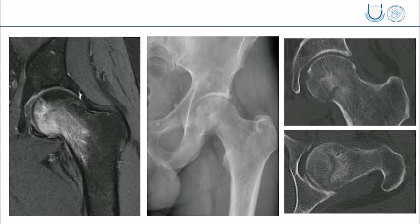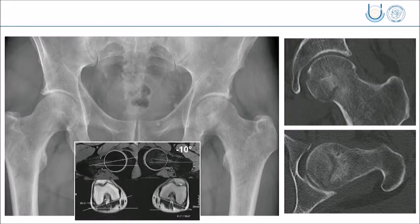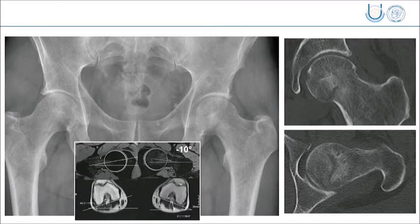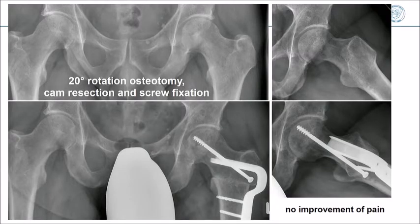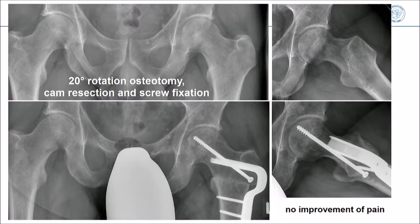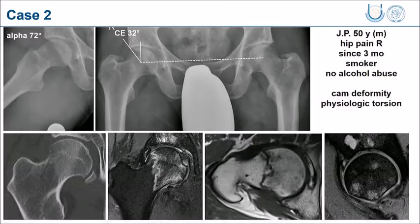Three years after initial treatment he has a persisting problem. Looking at his anatomy further, you see a significant external rotation of the femur and decreased femoral antitorsion of about minus 10 degrees. We thought it would be good to perform a combination of a rotation osteotomy, cam resection, and screw fixation. It healed perfectly. However, one year after the procedure the patient still has the same pain, and even after hardware removal he still has necrosis, still has the fracture-type pattern, and there is no real improvement.